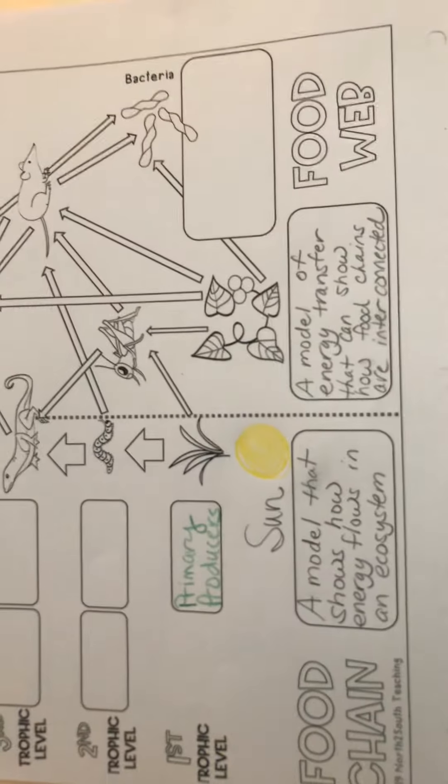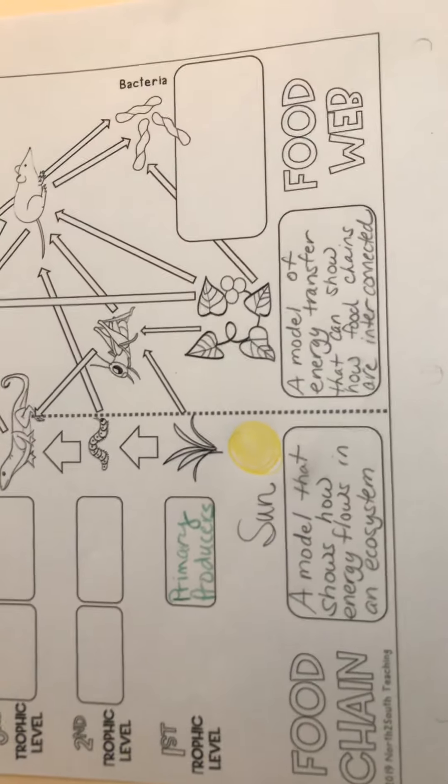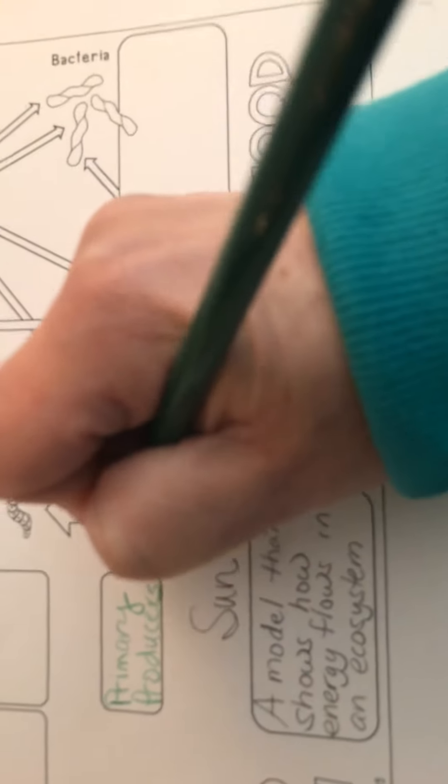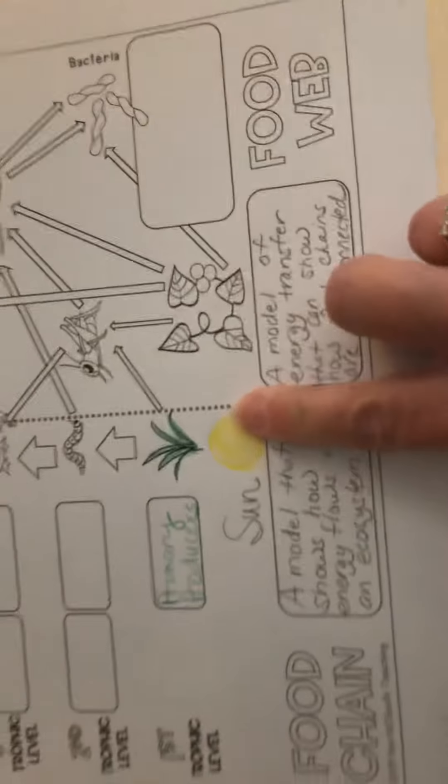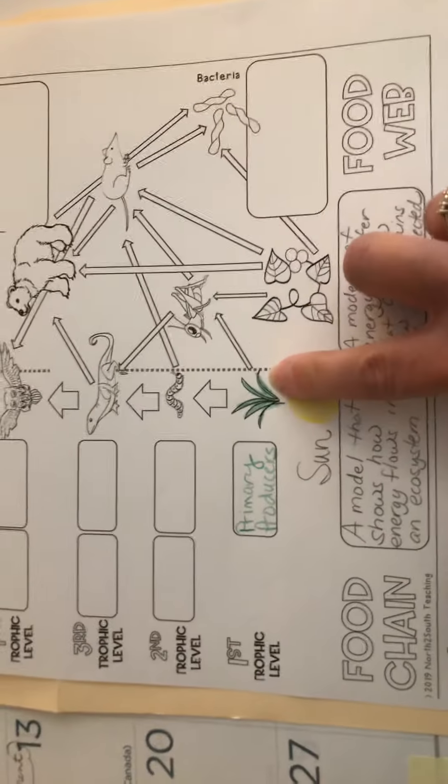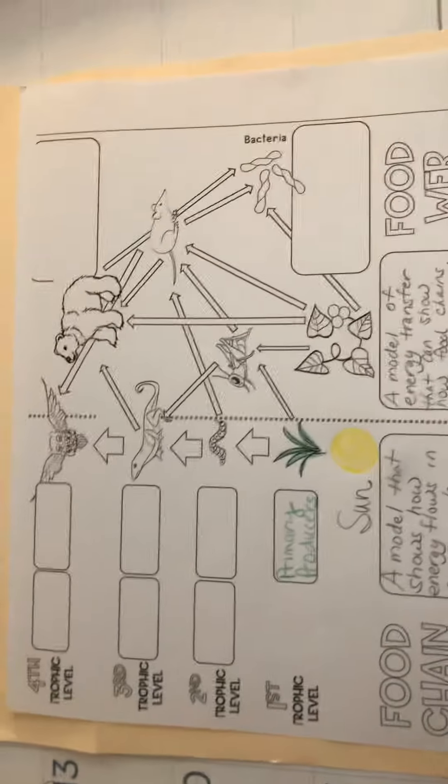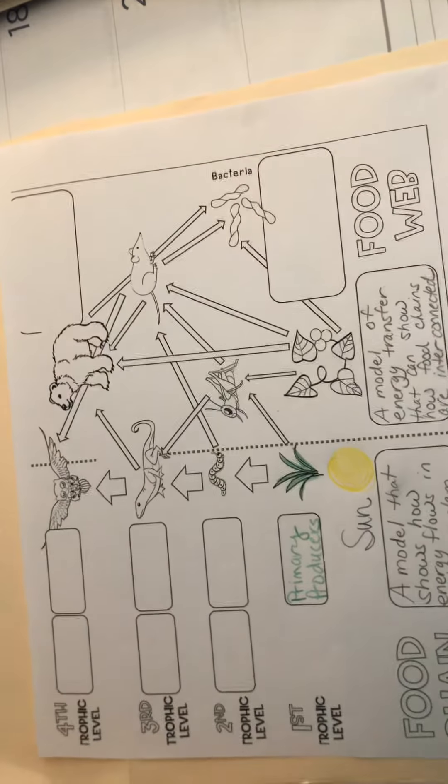producers. Primary producers are always going to be plants, plants of any kind. Plants are the only things that can make their own food using energy from the sun, so those are the things that fall in producer category. Any kind of plants that make their own food would fall in that category.